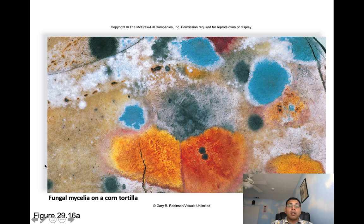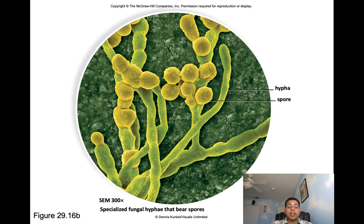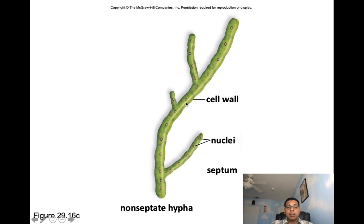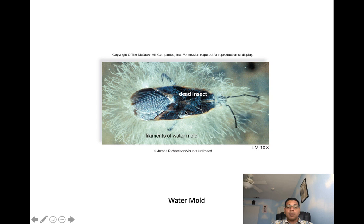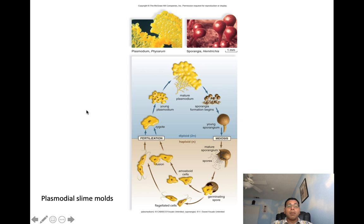Fungal cell walls contain chitin instead of cellulose — chitin, like cellulose, is a polymer of glucose. Glycogen is used as an energy reserve, as in animal cells. Fungi are non-motile; they move toward a food source by growing toward it. Here we can appreciate fungal mycelia on a corn tortilla. The life cycle of a plasmodial slime mold involves meiosis hitting the young sporangium, causing it to become a mature sporangium which releases spores. Germinating spores give rise to amoeboid and flagellated cells, which undergo fertilization forming a zygote, then a young and mature plasmodium, which undergoes sporangia formation, continuing the cycle.